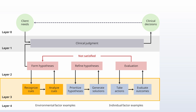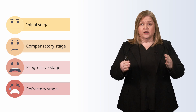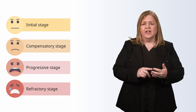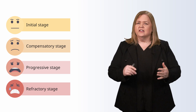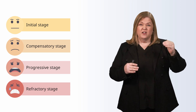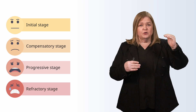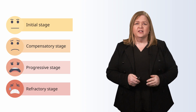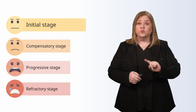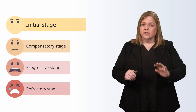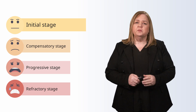Let's take a look at recognizing cues and analyzing cues. You can see on your screen four stages: initial, compensatory, progressive, and refractory. The cues in shock are going to vary depending on the stage of shock that the client is in — from the top where things are okay, all the way down to the bottom where things are so not okay. We're talking about hypovolemic shock, and these cues vary along this continuum.